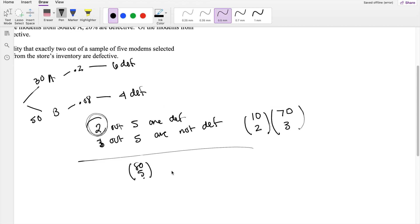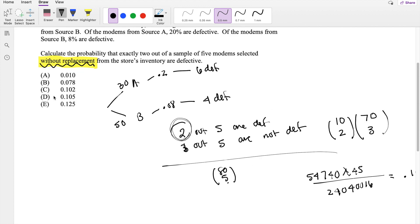Alright, so I'll plug that into my calculator. We have 5,4,7,4,0, times 45, divided by this really big number, 2,4,0,4,0,0,1,6, which is equal to about 0.1024, 0.102, which is our answer, C.